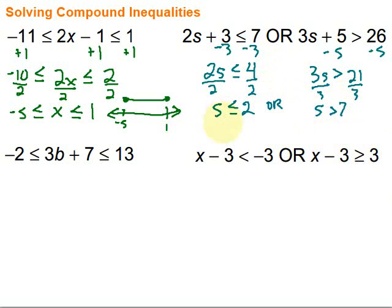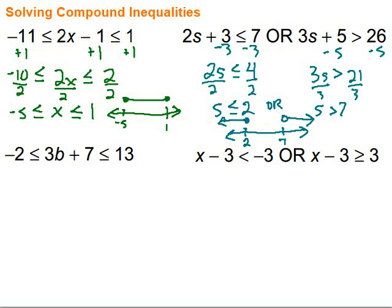In an OR situation, what's usually going to happen is that the lines go off in opposite directions. We have 2 and 7 as our endpoints. At 2, it's less than or equal to, so it's a filled-in circle going left. At 7, s is greater than 7, so it's an open circle going right. In an OR situation, we're looking for places where at least one of the graphs covers. In an AND situation, we're looking for where they cross — the overlapping part.